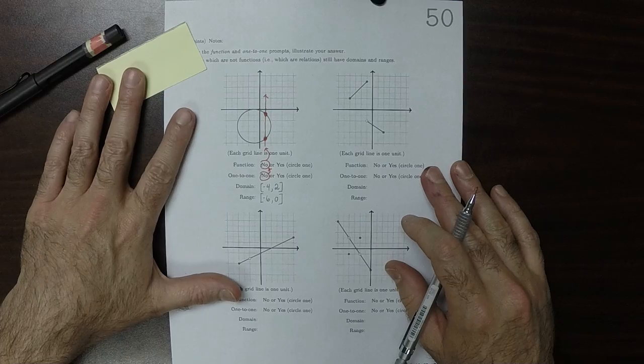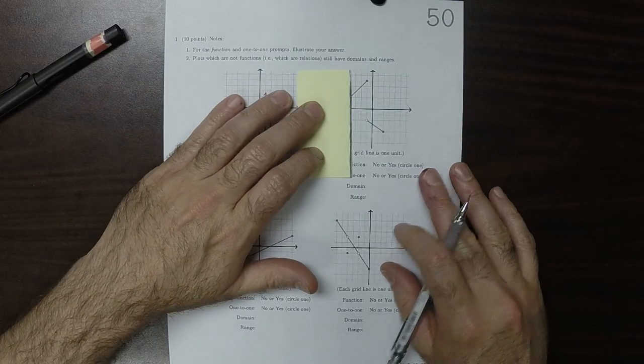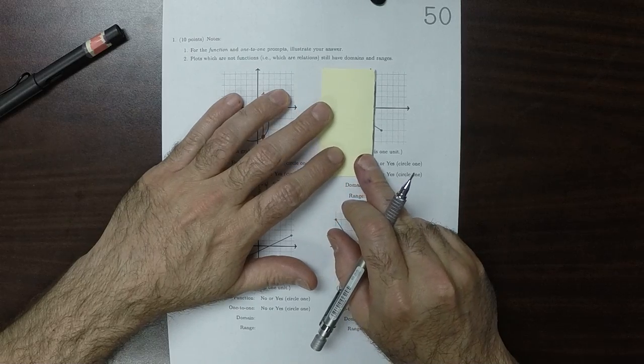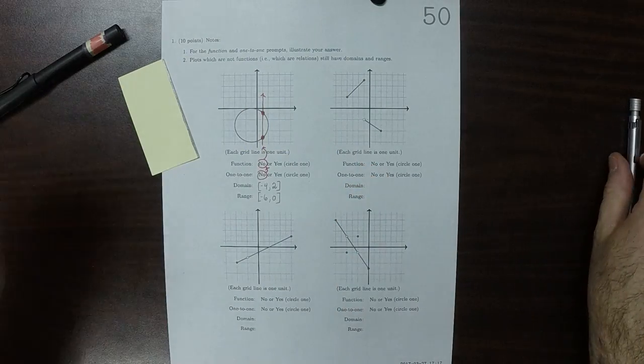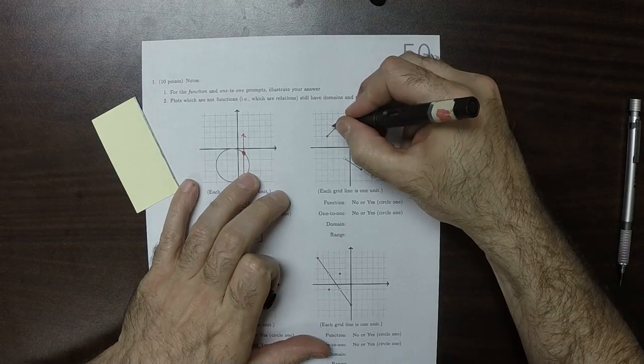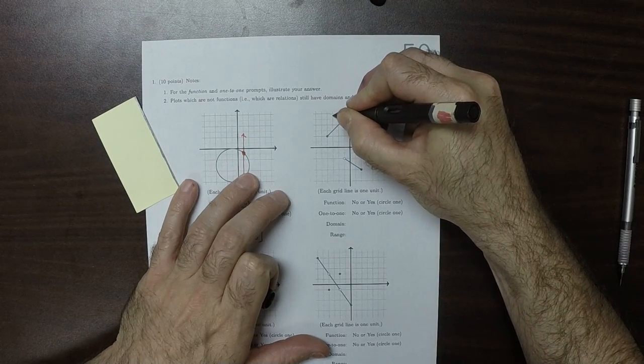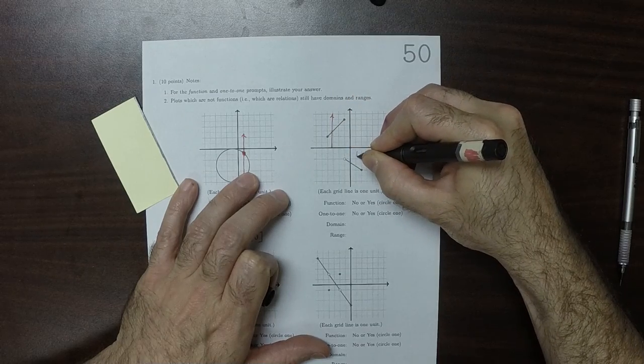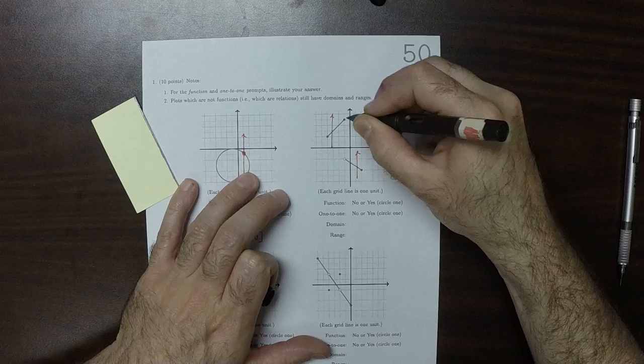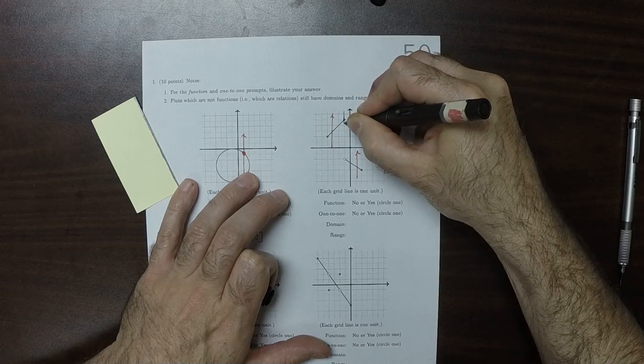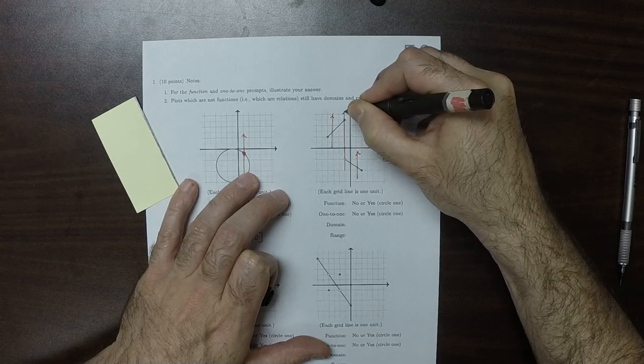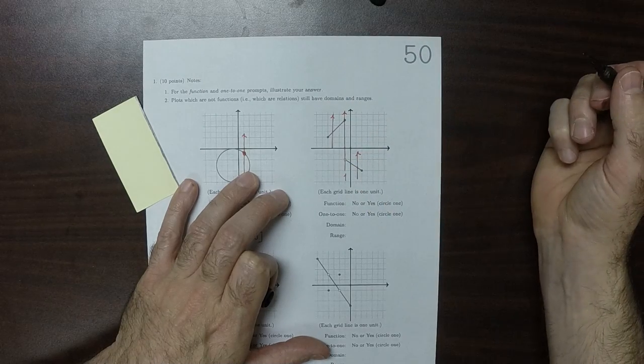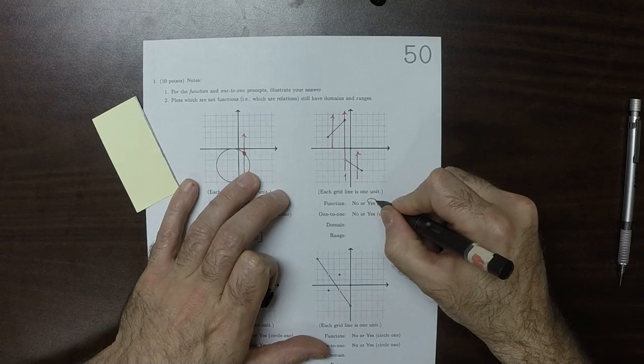For the top right, is it a function? Does every vertical line intersect zero or one times? Yes. So you can see that here for this region, there's just one intersection. And for this part down here, there's just one intersection. And then for this one right in the middle where they join, that's still just one. So yes, it is a function.